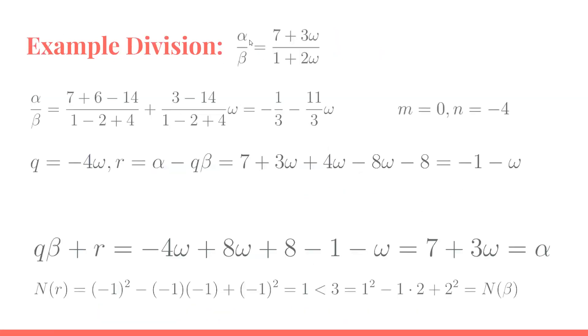A quick example of going through a division here: we're going to take α = 7 + 3ω, β = 1 + 2ω. We'll do this division out in the rationals, get -1/3 - 11/3 ω. We round to the nearest integers, we get m = 0 and n = -4, so then we end up with q = -4ω. We calculate out r to be -1 - ω. If we plug this back in, we see that qβ + r does indeed equal α.